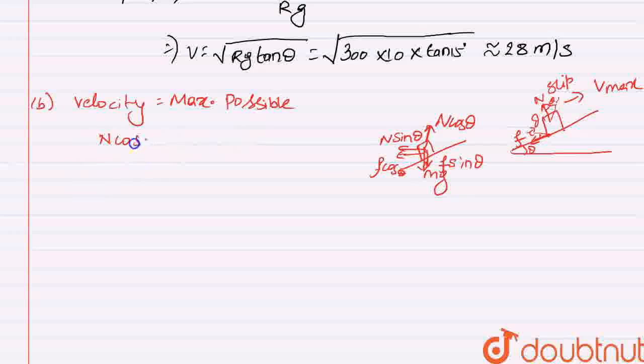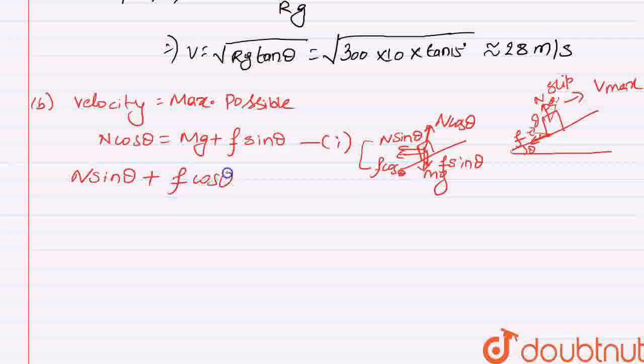And from here you can see what we'll have? We'll have N cos theta will be equal to Mg plus frictional force F sin theta. As the vertical positive y force will be equal to the y direction force in the negative direction. So this is the first equation. And then again, these both horizontal force will provide the centripetal acceleration that is N sin theta plus F cos theta will be equal to Mv square upon R. And this V will be Vmax.